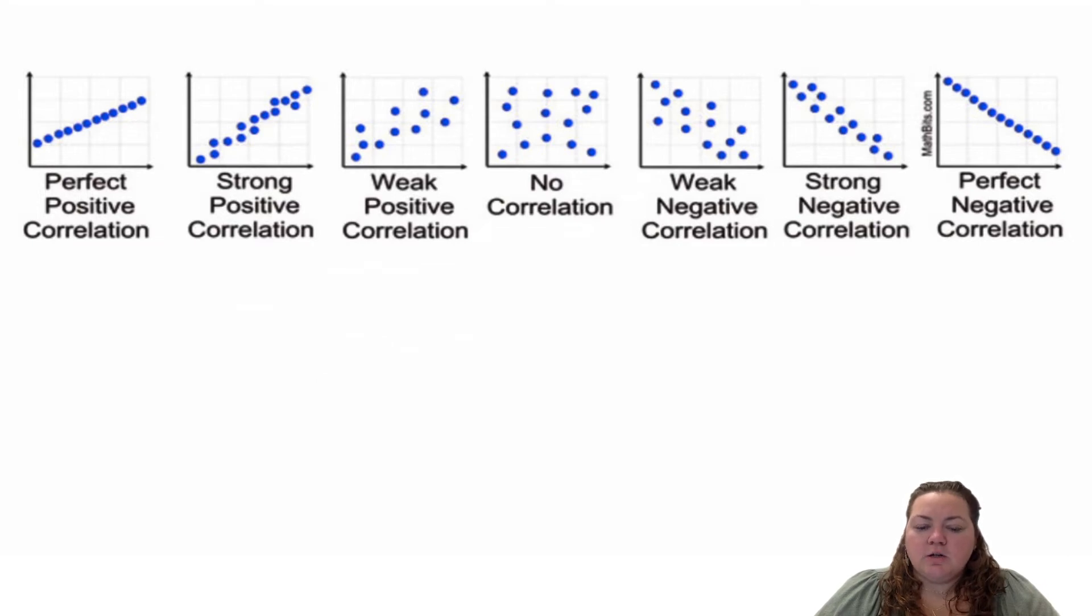no correlation, a strong negative correlation, and a perfect negative correlation. So you can kind of see those correlations—it's about how spread out those dots are visually.